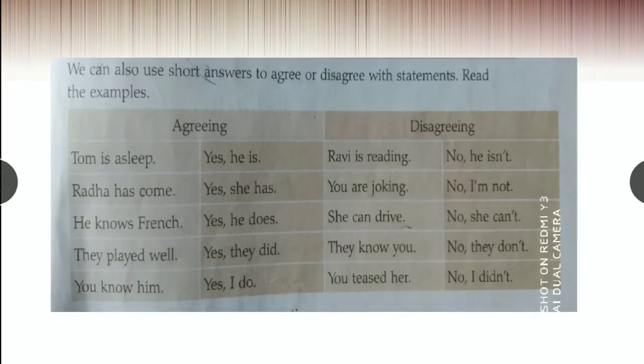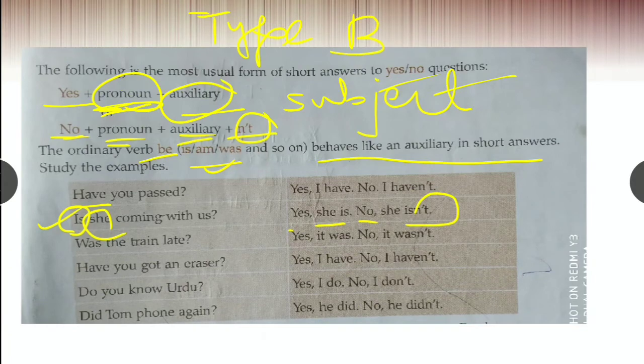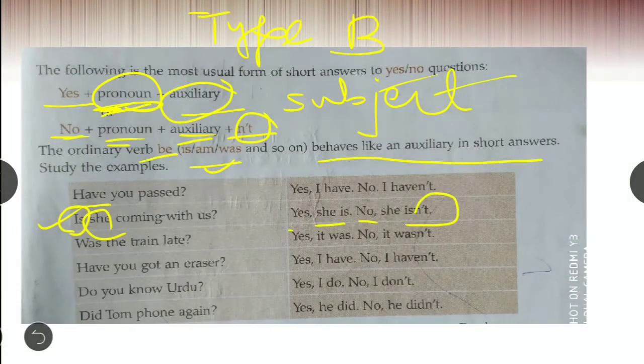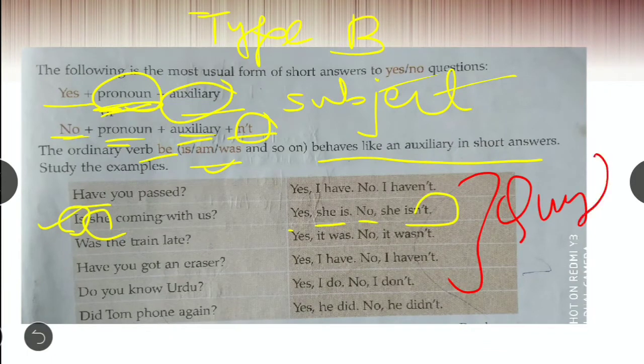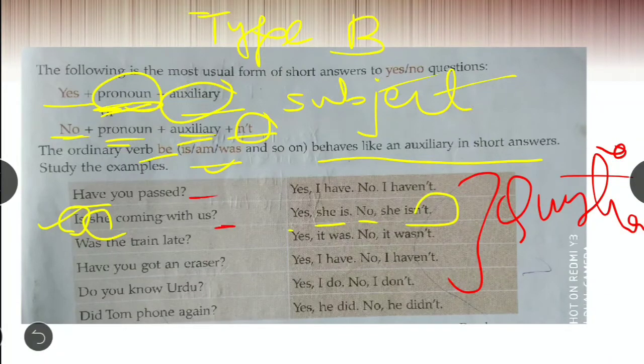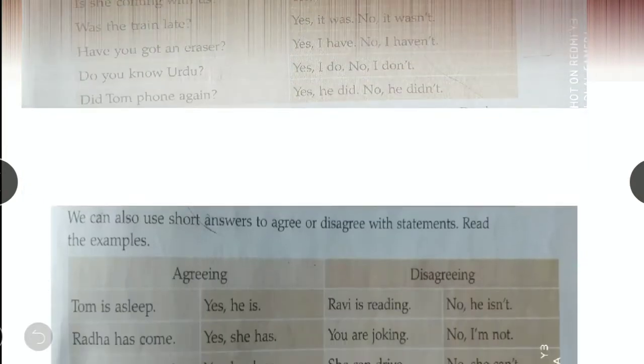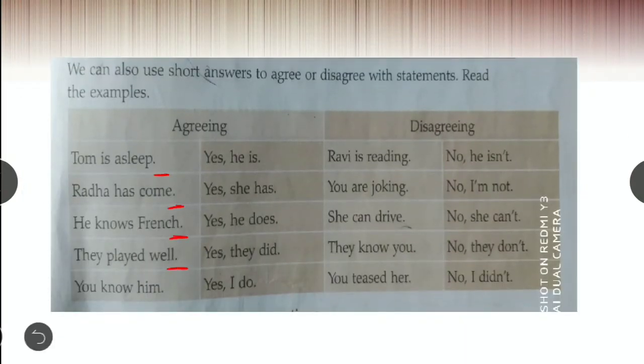We can also use short answers to agree or disagree with statements. Now, agree and disagree, the rules are the same. Tom is asleep. Somebody just said a sentence. Here it's a question asked, but what you are going to study now is statements with a full stop. You can use it to give agreeing or disagreeing answers. Tom is asleep. Yes, he is. Radha has come. Yes, she has. The formula is the same. Yes or no, pronoun, and the auxiliary verb.